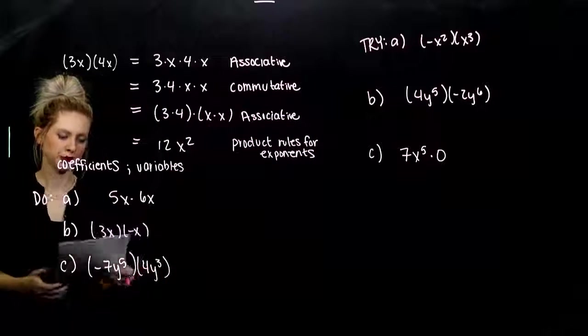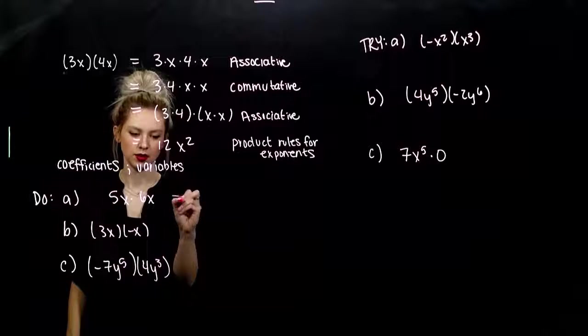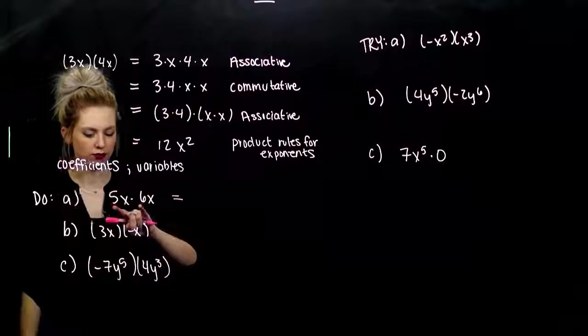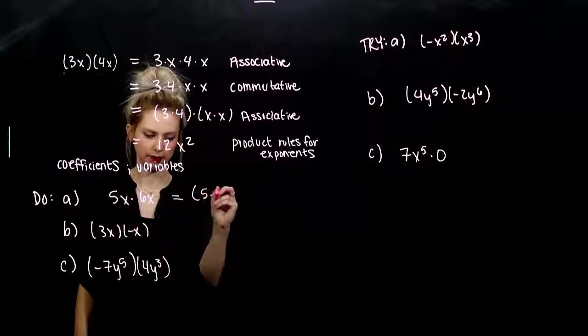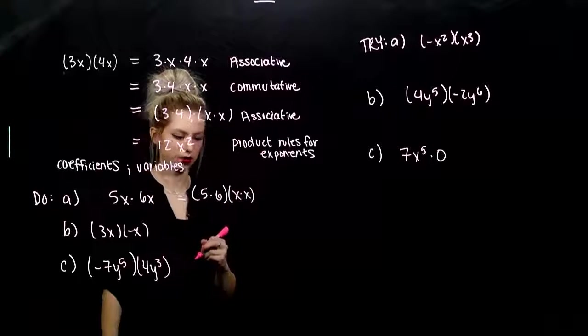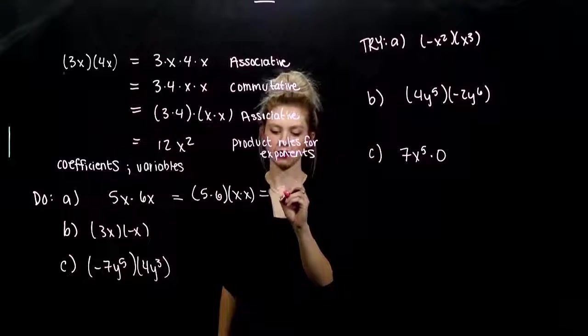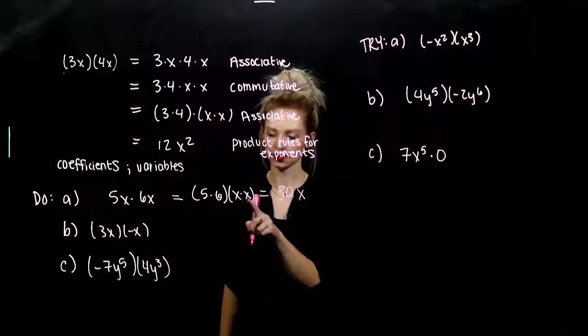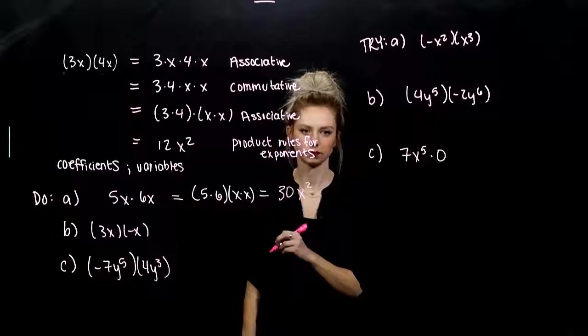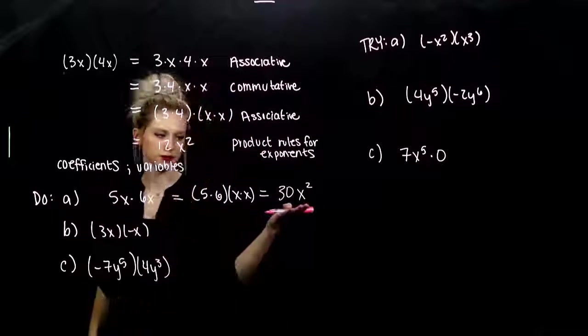So, we're going to take a few and look at each of these. So, again, we can multiply the coefficients, or the constants together, and the variables together. So, what am I looking at? Five times six will give me thirty. How many factors of x do I have? Two. Concisely, we can write that as thirty x squared.